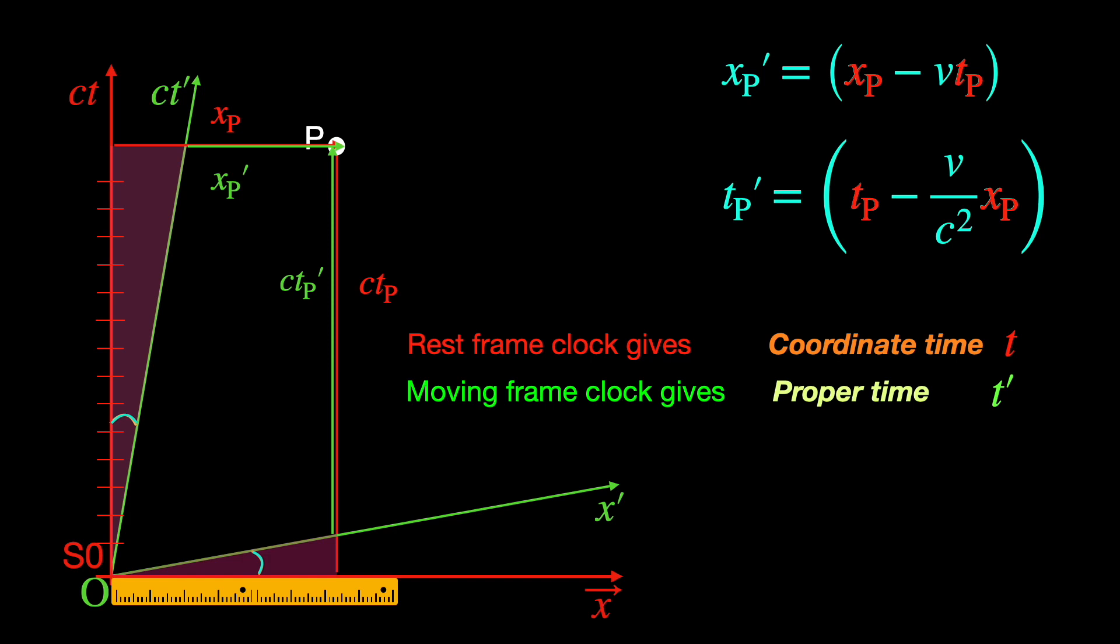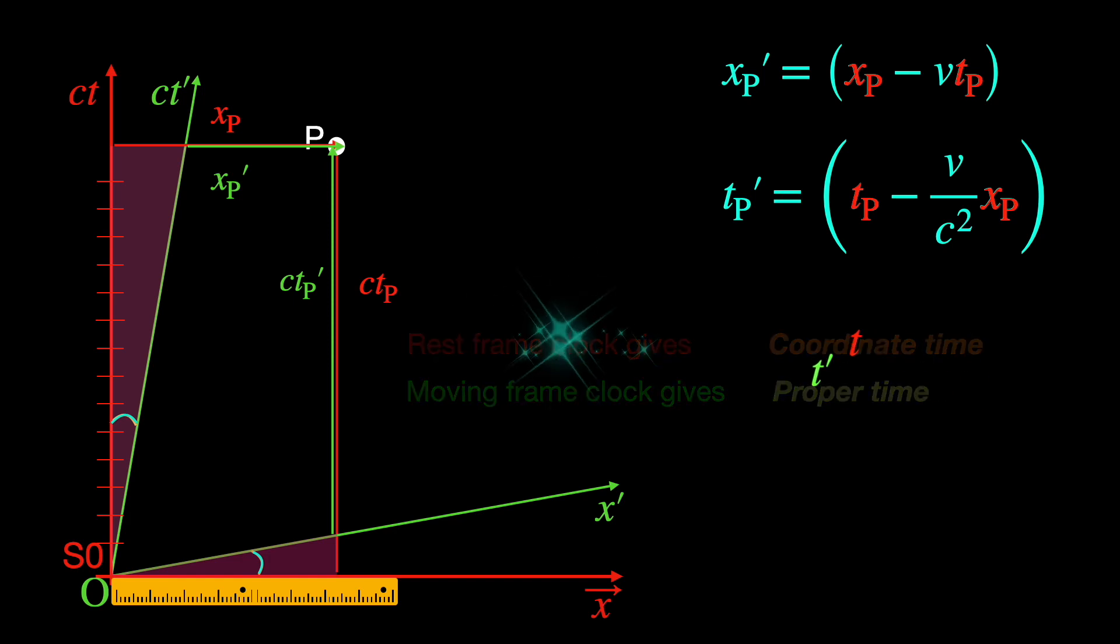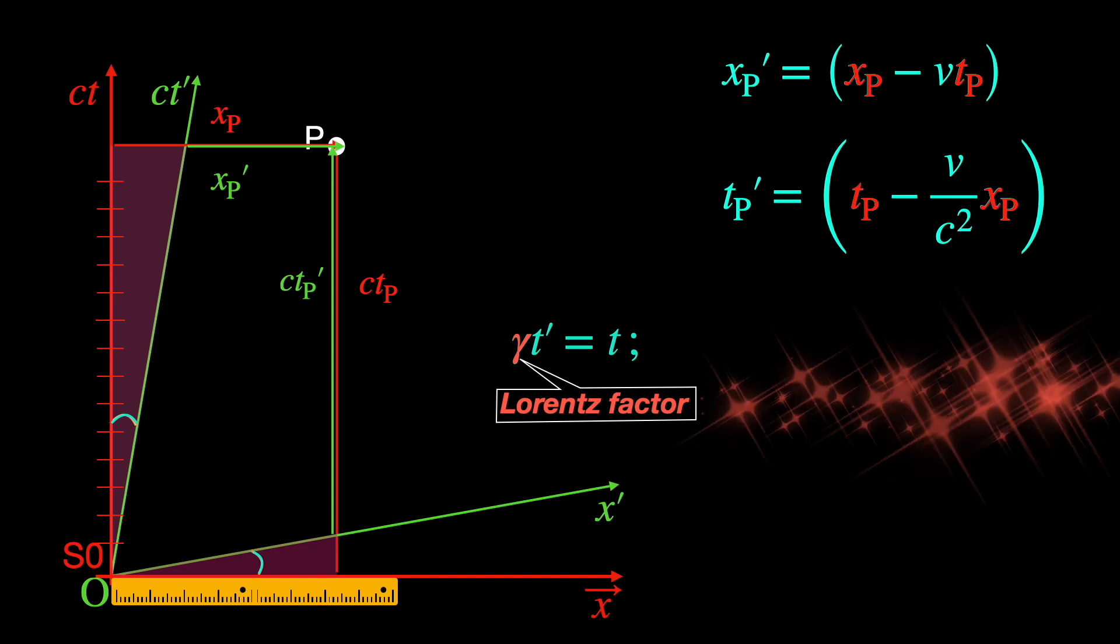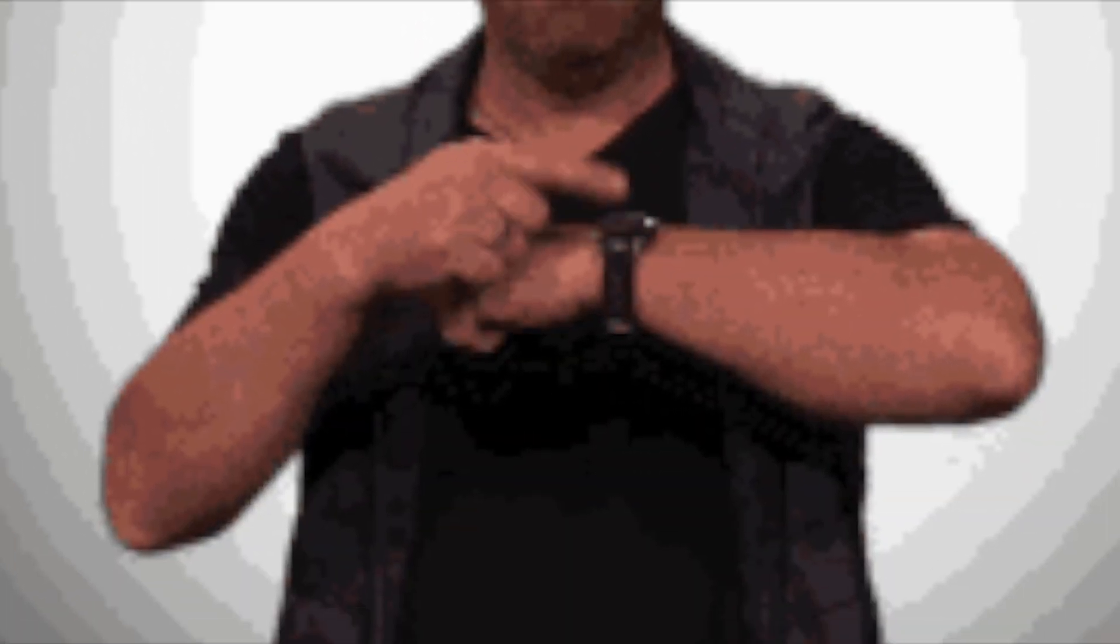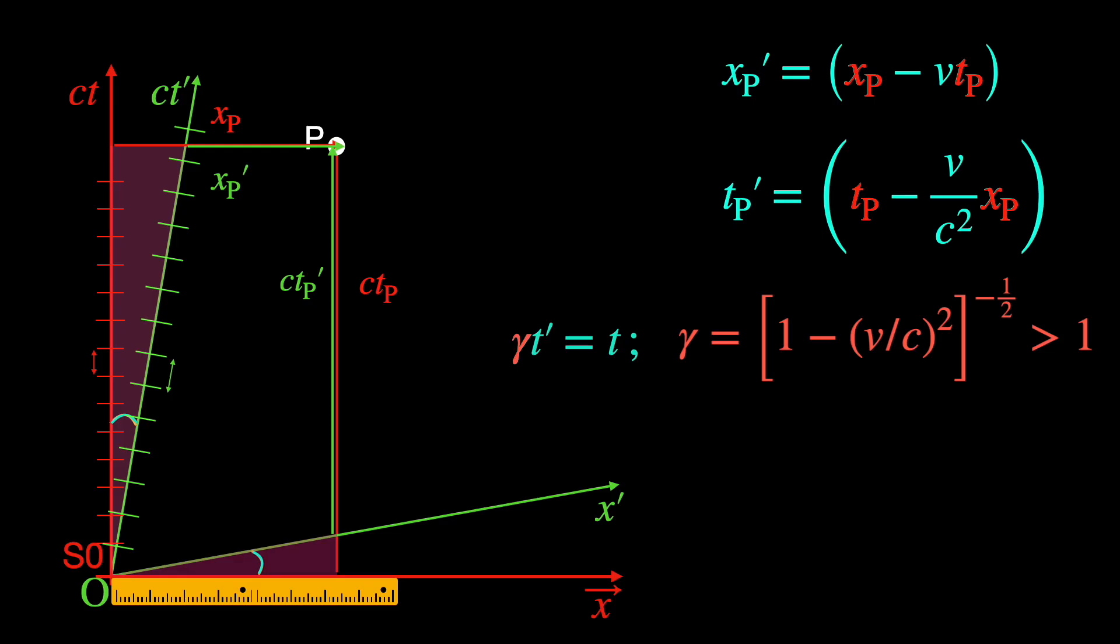If you have watched my earlier video on coordinate time and proper time, you would know that coordinate time is measured along the rest frame time axis and proper time along the moving frame time axis. And for any given value of the proper time, the corresponding coordinate time is always bigger by the Lorentz factor. Therefore, unit of time or 1 second in S0 frame must be smaller than 1 second in S1 frame by inverse of that same Lorentz factor. Thus, the time coordinate value of the event p, that is t prime p in the moving frame S1 must be scaled up by the Lorentz factor.